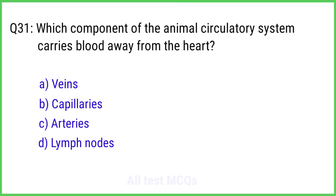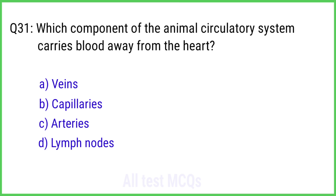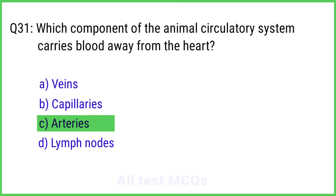Question No. 31. Which component of the animal circulatory system carries blood away from the heart? The correct answer is Option C: Arteries.